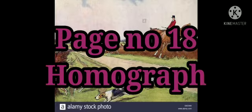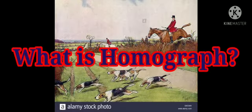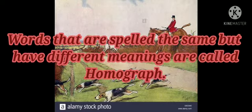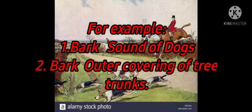Homograph. What is Homograph? Homograph کا کیا مطلب ہے? Words that are spelled the same but have different meanings are called Homograph. ایسی الفاظ جن کے spelling same ہوتے ہیں لیکن ان کے meaning different ہوتے ہیں انہیں Homograph کہتے ہیں۔ For example,